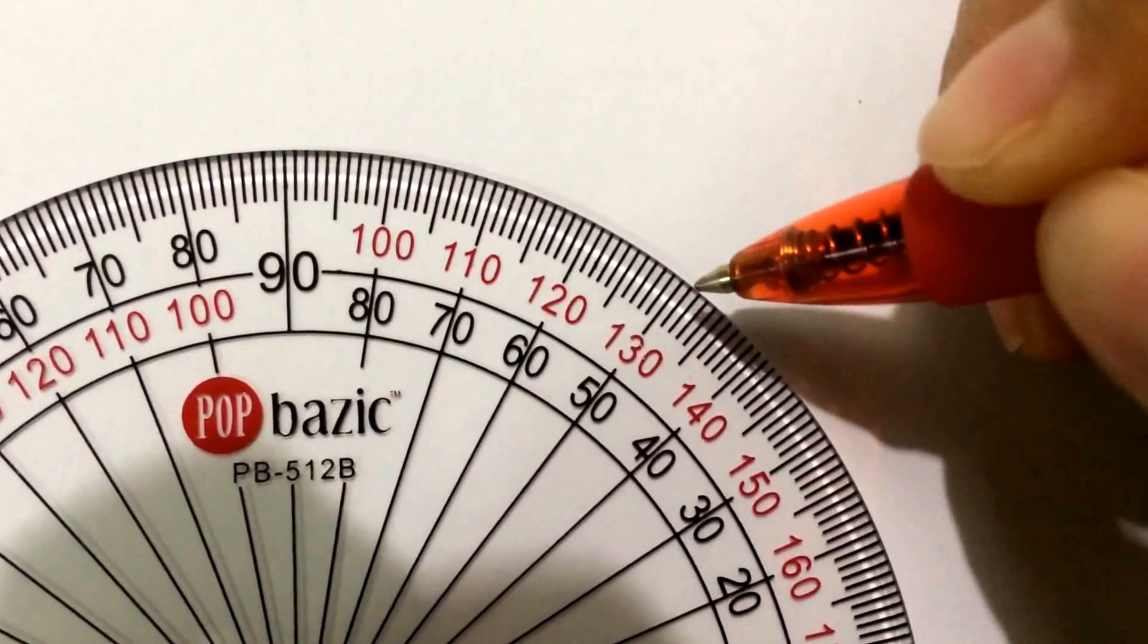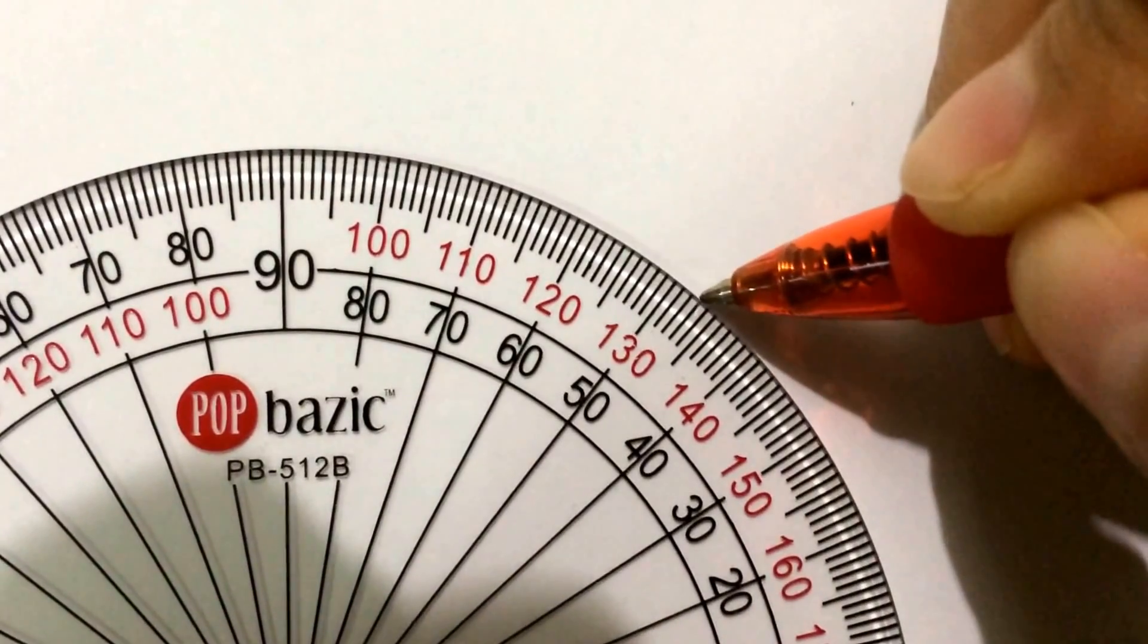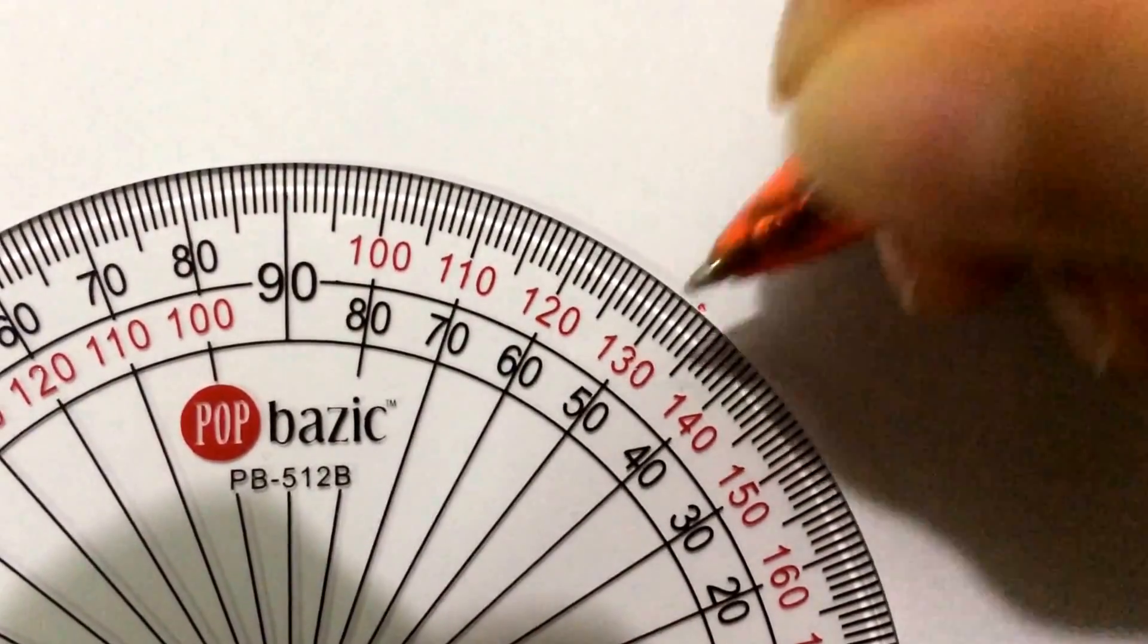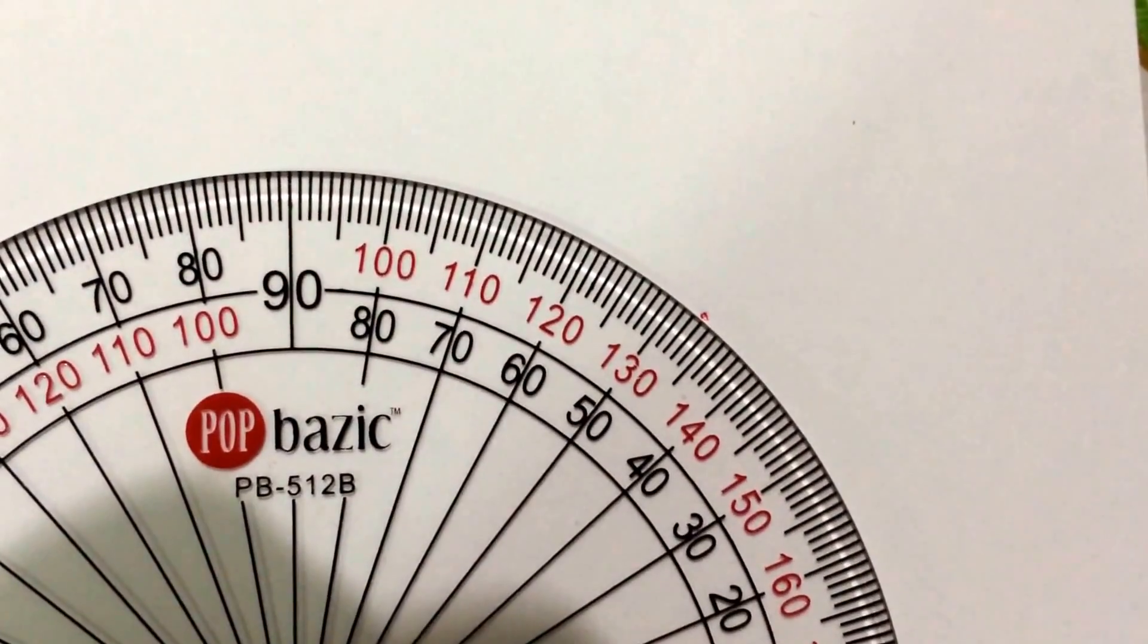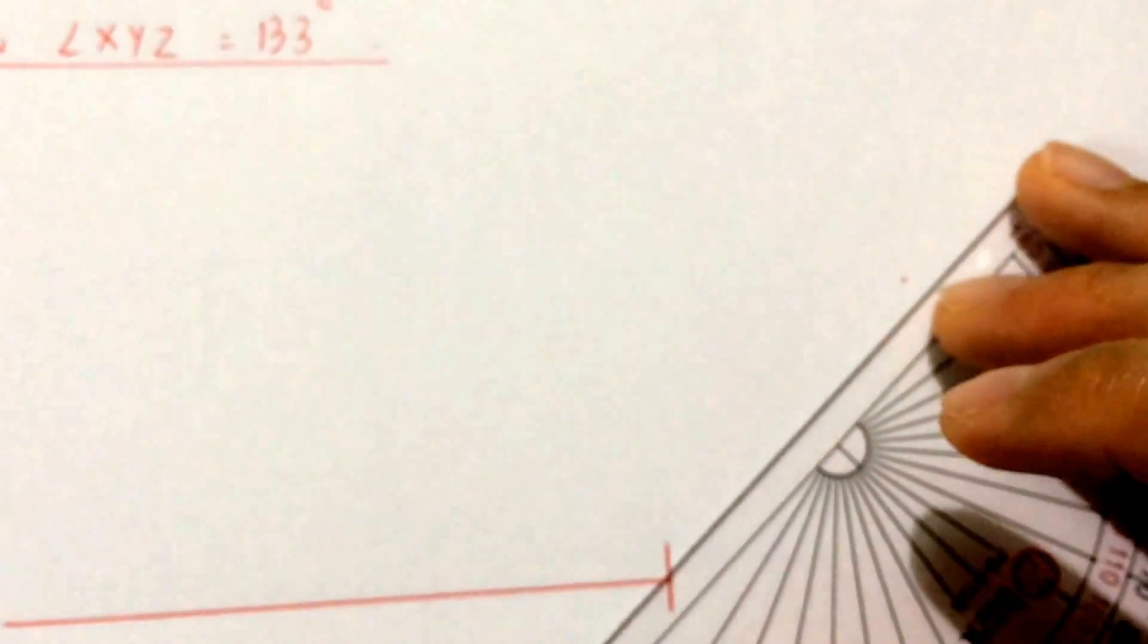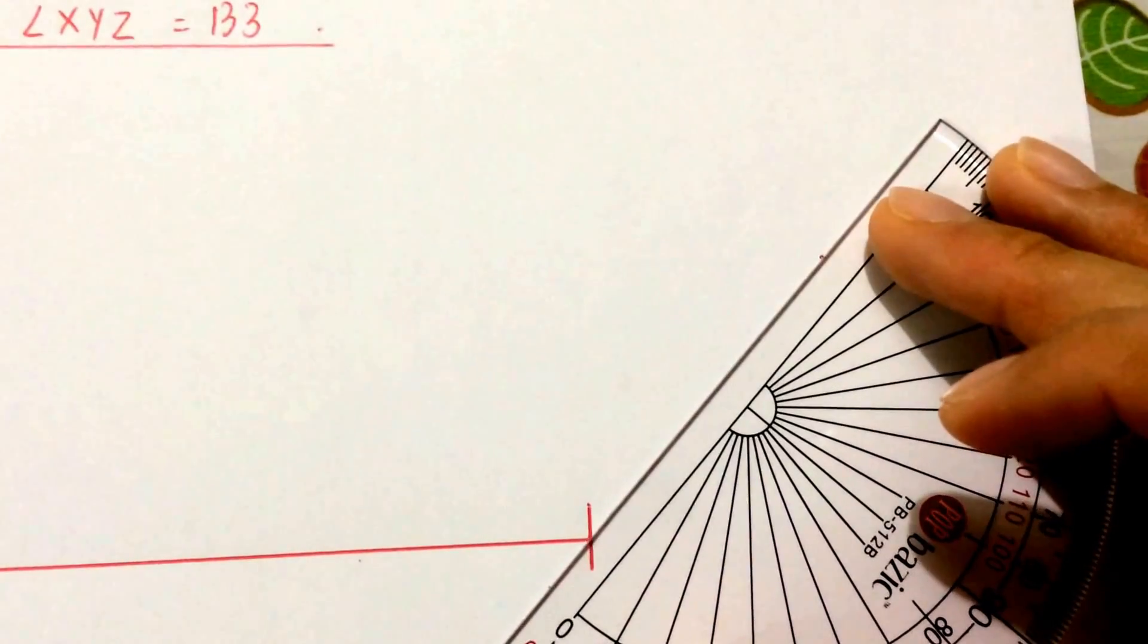130, 131, 132, 133. So I put a marking here at 133 and I will take away the protractor and draw this line down here.